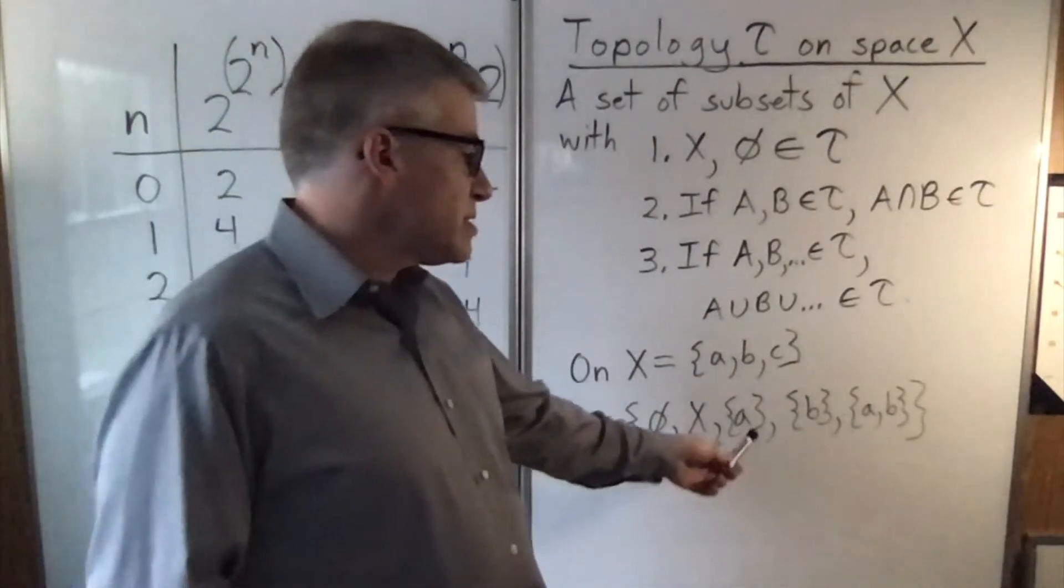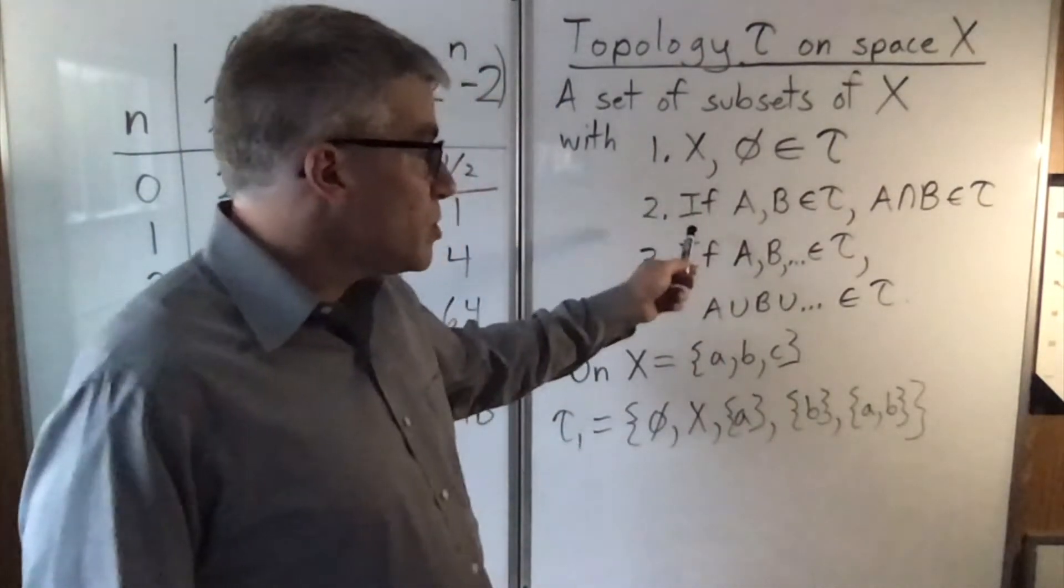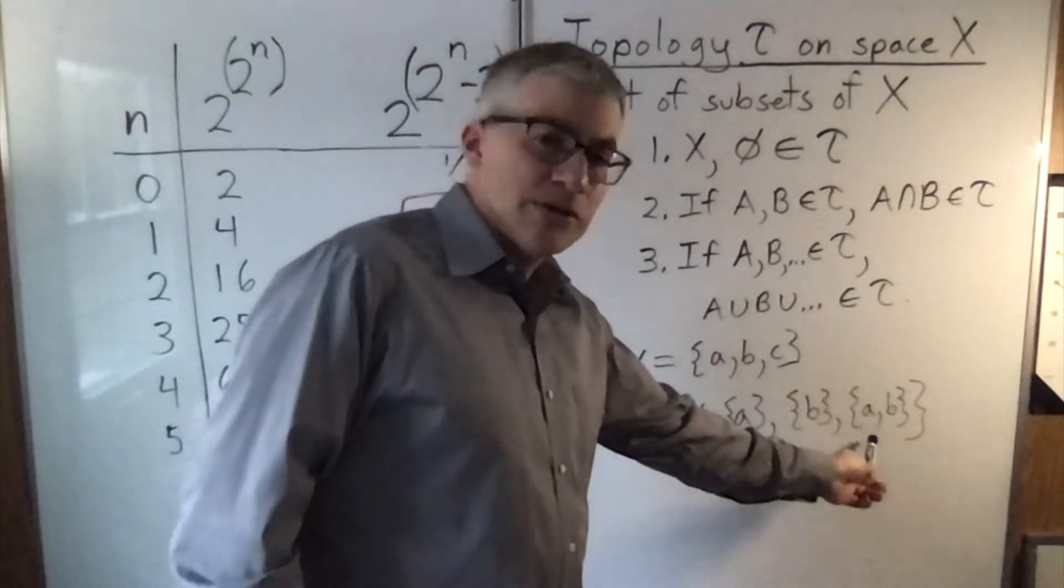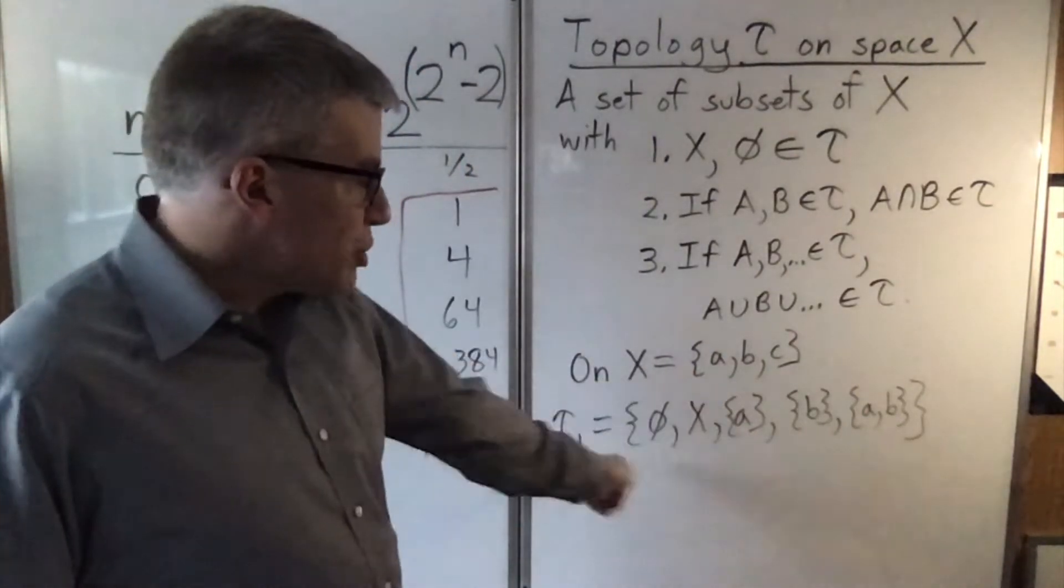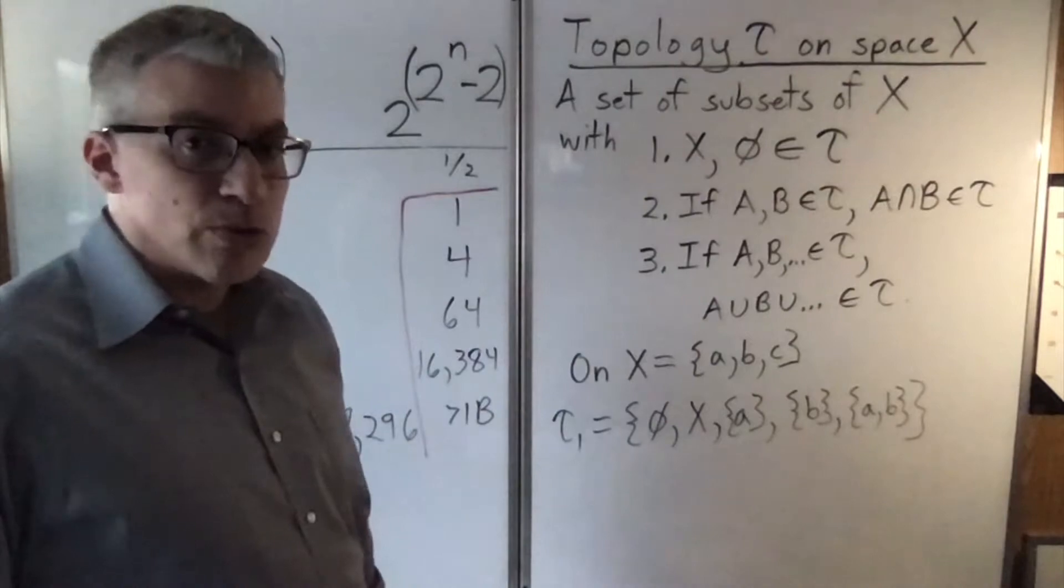And for this one let's say it has A and B. Therefore by the rules it has to have A union B. So A and B. That is actually enough that satisfies all the rules for a topology.